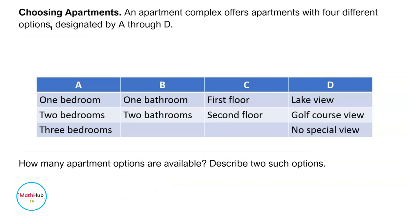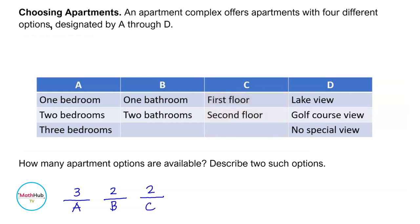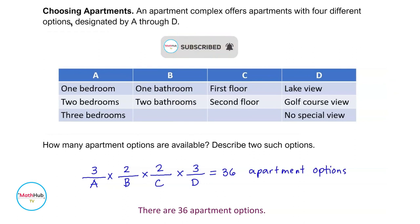We will use the basic counting principle. For A, we have three choices for bedrooms. For B, two choices — one bathroom or two bathrooms. For C, two options — first floor or second floor. For D, three choices — lake view, golf course view, or no special view. Multiplying: three times two times two times three equals 36. We have 36 different apartment options.